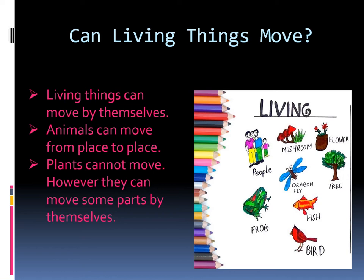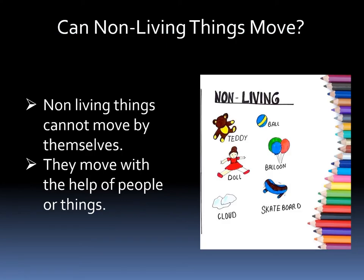Animals can move from place to place. Plants cannot move from place to place, however they can move some parts by themselves. Plants move in the direction of light.